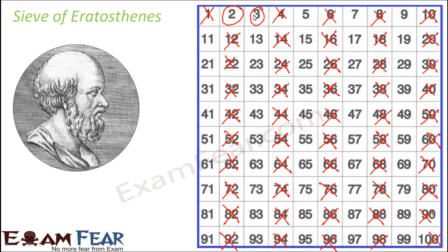Now what do we do? We cross out all the multiples of 3. Now the numbers which are already crossed out, like 6 is a multiple of 3 but it is already crossed out, so it is fine.